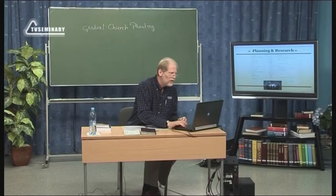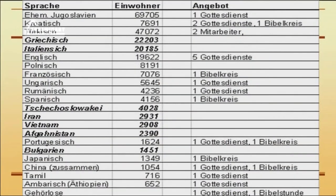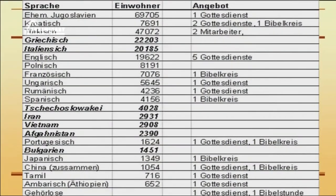We also looked at the various ethnic groups and asked ourselves whether there was any outreach to them. Some of these are immigrant groups where people do not speak German or speak very little German, so they really need a specialized outreach. At that time in the 90s there was a civil war in what used to be Yugoslavia — Bosnia, Croatia, Serbia. We had many refugees come to the city, and not even counting Croatia, you had about 70,000 people that had come in, many refugees living in the city.